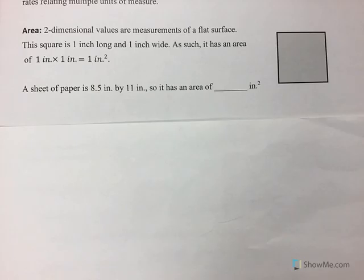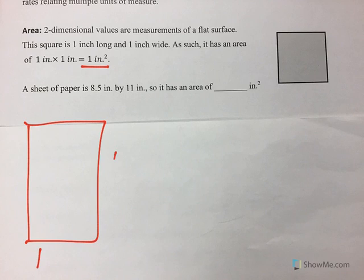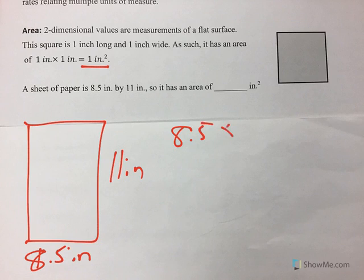And 2-dimensional values are measured of a flat surface, like if you're going to paint your wall. So this square is 1 inch long and 1 inch wide. Therefore, 1 times 1 is 1 square inch. A sheet of paper is 11 inches by 8.5 inches. The area of that would be 8.5 times 11, which I believe is 93.5, 93.5 square inches.